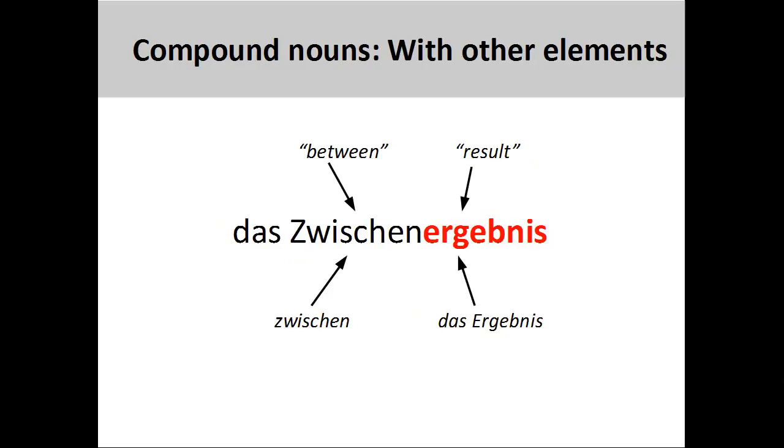Finally, it is important to note that other elements besides nouns, such as adjectives, adverbs, verbs, and prepositions, can be used to form compound nouns. The final element in a compound noun, however, must be a noun. The compound noun you see on the screen, das Zwischenergebnis, interim result, is comprised of the two-way preposition zwischen, between, and the neuter noun das Ergebnis, result.